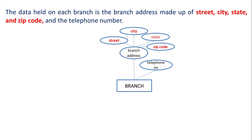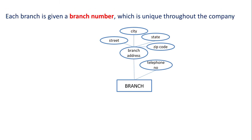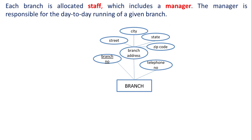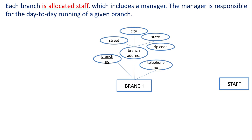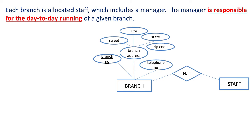Each branch is given a branch number which is unique throughout the company. Branch number is an attribute of branch, and since it is unique, it can be set as the primary key for branch. Each branch is allocated staff, which includes a manager. Since manager is also a staff member, we need to keep only one entity — staff. Each branch is allocated staff, meaning there is a relationship between branch and staff.